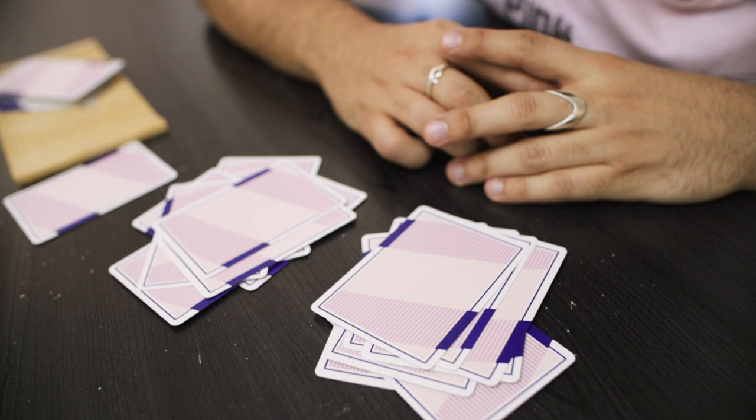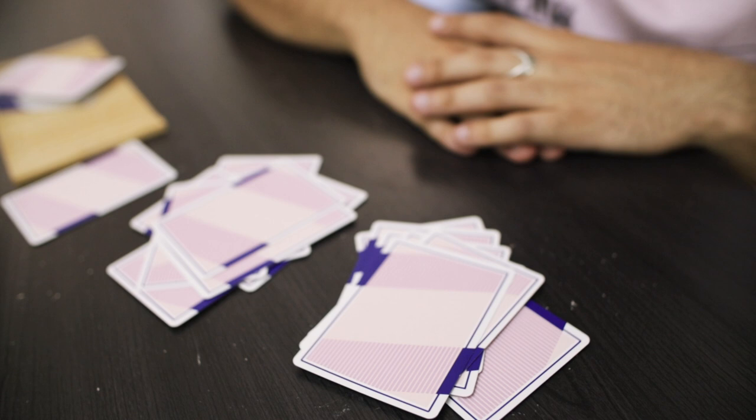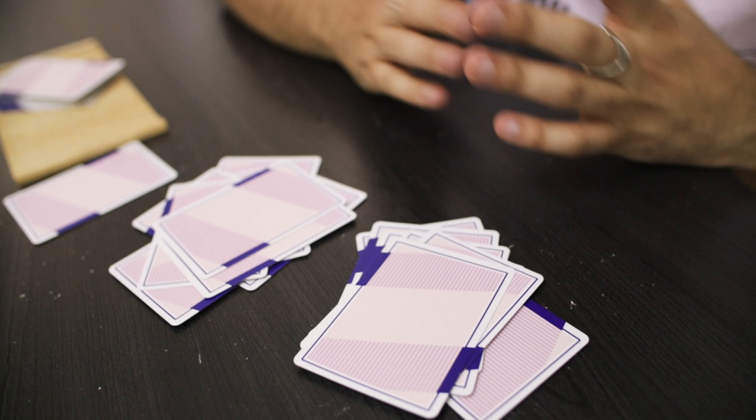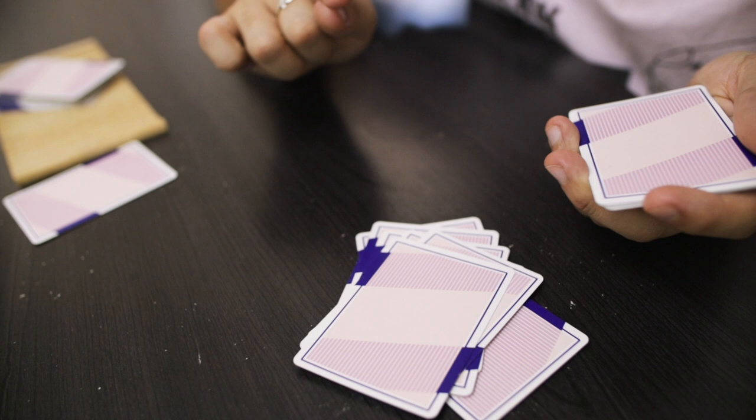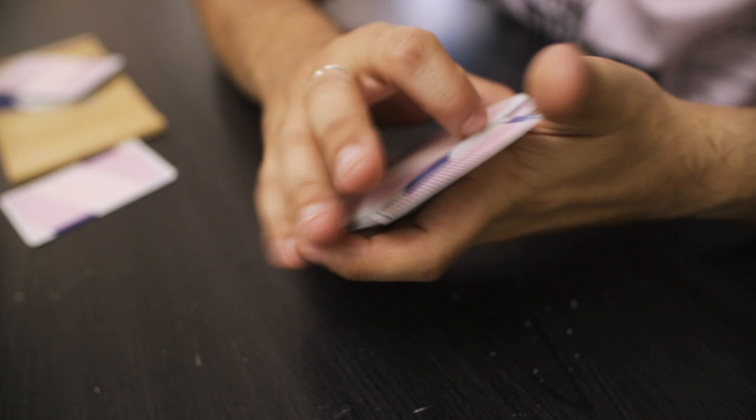Now, what you're going to do in case the spectator happens to deal the last two cards into the same pile is you're going to say, now what I want you to do is do me a favor and pick up whichever pile you want. Now, if the spectator happens to pick up this pile, that's fine. It doesn't matter because you're going to say, and I want you to pick up this pile and put it on top of the pile in your hand. And guess what, baby? You're left with the two cards on top of the deck that need to be on top of the deck.